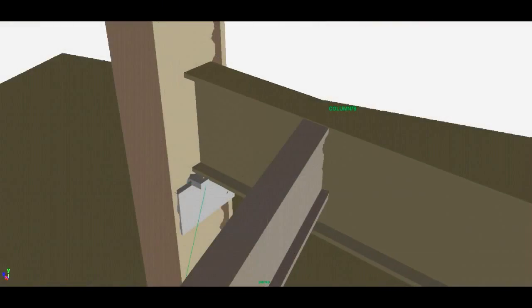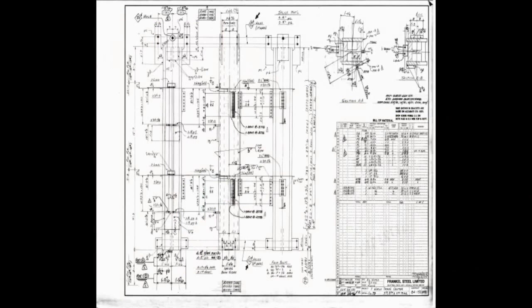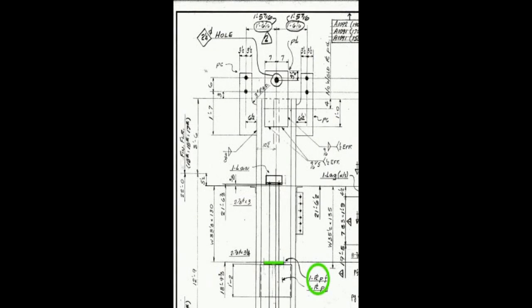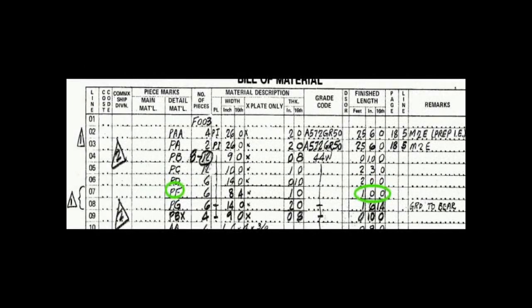But there are some even more serious errors in this story. This is drawing Frankel 1091. It references what NIST says is an 11 inch seat plate as PF. But when you look at the bill of materials, plate PF is in fact 1 foot long, 12 inches and not 11. So already, we have went from this to this.